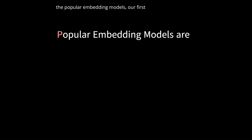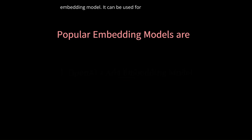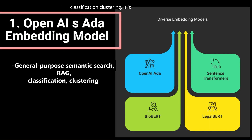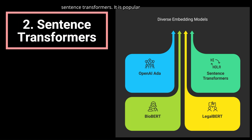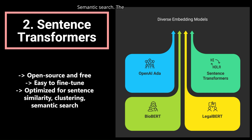Coming to popular embedding models: the first is the OpenAI Ada Embedding Model. It is used for general-purpose semantic search, classification, and clustering. It is popular because it provides high-quality embeddings, is scalable and fast, and is continuously improved. The second is Sentence Transformers. It is open-source and free, easy to fine-tune, and optimized for sentence similarity, clustering, and semantic search.